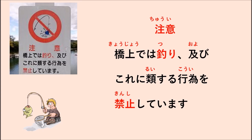Let's read one more time. Chui. Kyojou-de-wa, tsuri, oyobi, kore ni ruisuru koi o kinshi-shite-masu. That means: fishing on the bridge and any action similar to this is prohibited. I hope you understand the meaning of this sign. When you travel in Japan and see a sign like this, you can read and understand what they want you to do.